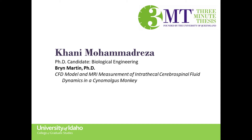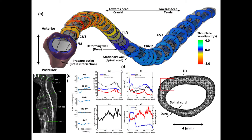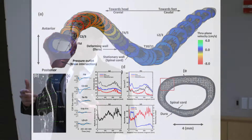Today I want to talk about the CFD simulation and MRI measurement of intrathecal cerebrospinal fluid in a cynomolgus monkey. The cerebrospinal fluid is a fluid around the brain and spinal cord that has a back-and-forth motion due to respiration and the arteries located in the cervical spine.